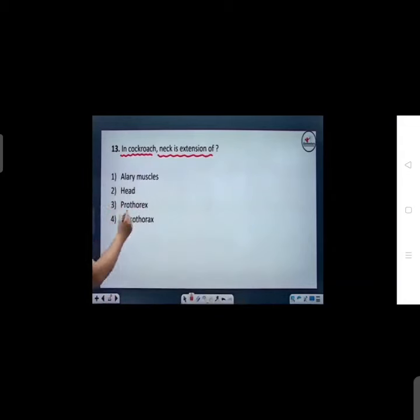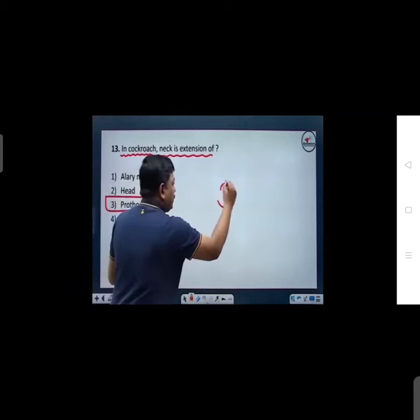So that is: alary muscles, head, prothorax, mesothorax. Answer hai prothorax. 3 is the answer.